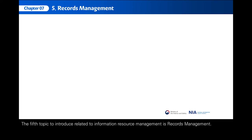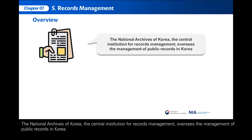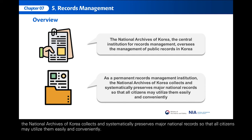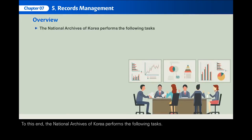The fifth topic to introduce related to information resource management is records management. The National Archives of Korea, the central institution for records management, oversees the management of public records in Korea. As a permanent records management institution, the National Archives of Korea collects and systematically preserves major national records so that all citizens may utilize them easily and conveniently. To this end, the National Archives of Korea performs the following tasks.